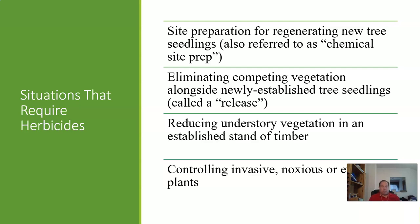The situations that really require herbicides: site preparation for regenerating artificial seedlings — specifically called chemical site prep — where we ensure the ground is set up for shade-intolerant species. Another situation is eliminating competing vegetation alongside newly established tree seedlings, which is that release concept — getting rid of competing woody vegetation or other trees that prevent our desired species from establishing.